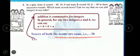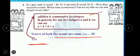Yes, we can add integers in any way because addition is commutative for integers. In general, for any two integers A and B, we can say A plus B equal to B plus A.